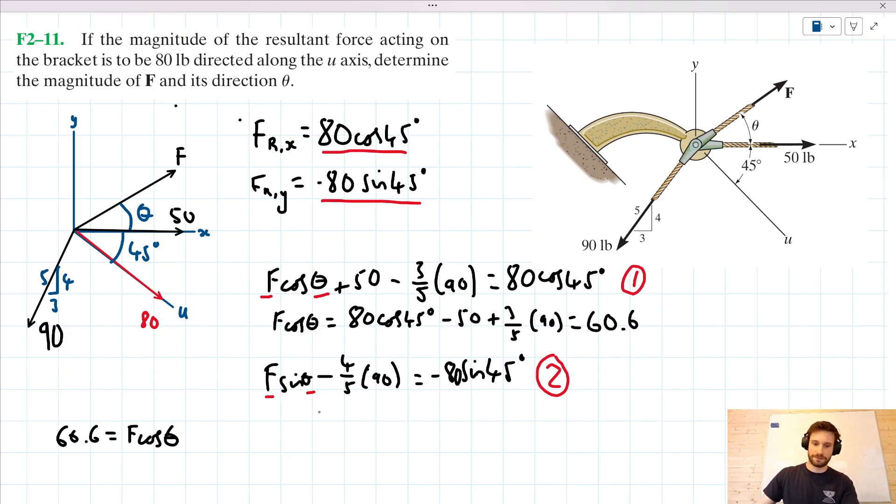I can do the same for the second equation. Let's write it out. I can say F sin theta equals minus 80 sin 45 plus 4 fifths of 90. And when I put that in my calculator, I get a value of 15.4. So let's write that down here. I've got 15.4 equals F sin theta.